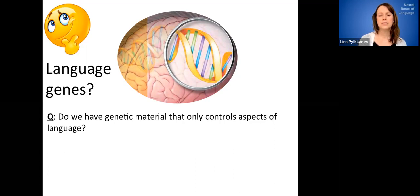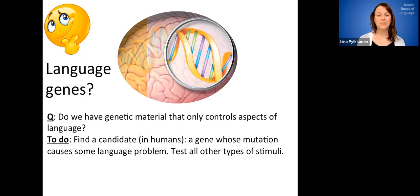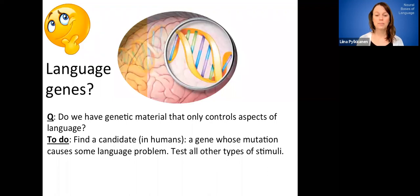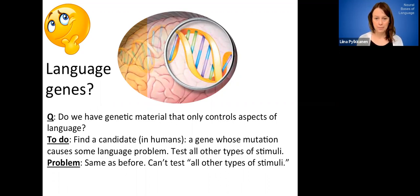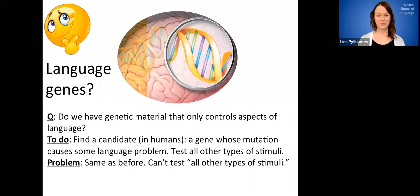So how would we study this? So first, we would have to have some, find some candidate genetic material in humans, because this is a question about language and language really in its full-fledged form exists in humans. So presumably, it would be something like genetic material in which if we had a mutation or some kind of alteration, it would cause language problems. So that would be the first discovery, you would identify something like that. And once you've identified individuals that have this mutation and have some language problems, then you would go ahead and tada, test all other types of stimuli.